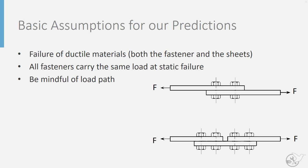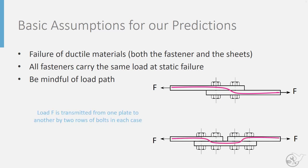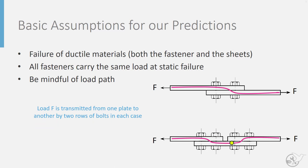The load transferred from one plate to another is very important to keep in mind and is related to the load path. Considering two joints — one with two rows of bolts and one with four rows of bolts — you must be mindful of how many rows actually transmit the load. In the upper case, two rows transfer load from one plate to another. In the lower case, two rows transfer it from the upper to the lower plate and two rows transfer it back, so in both cases the load F is transmitted by only two rows of bolts.